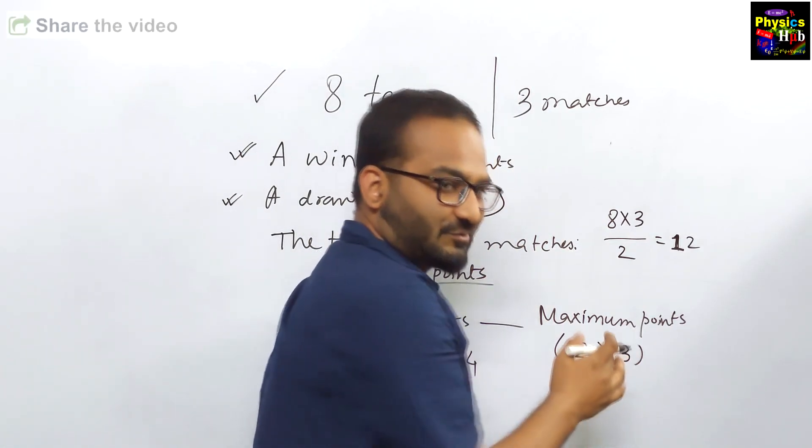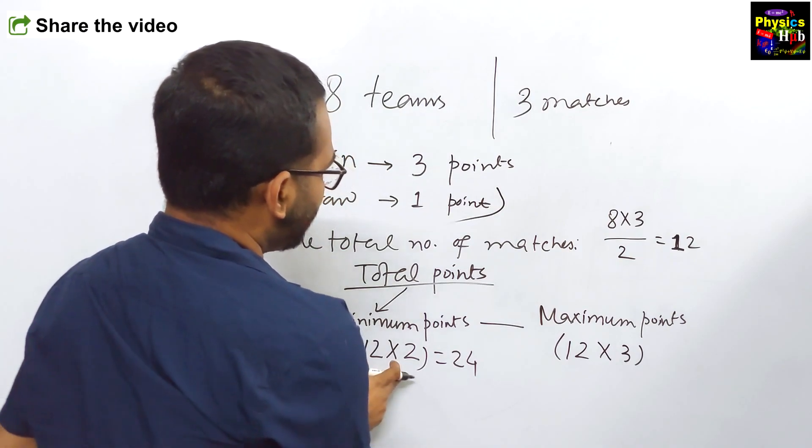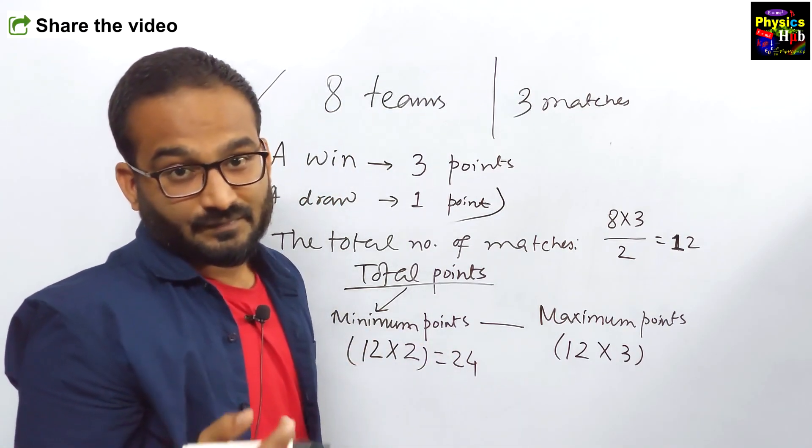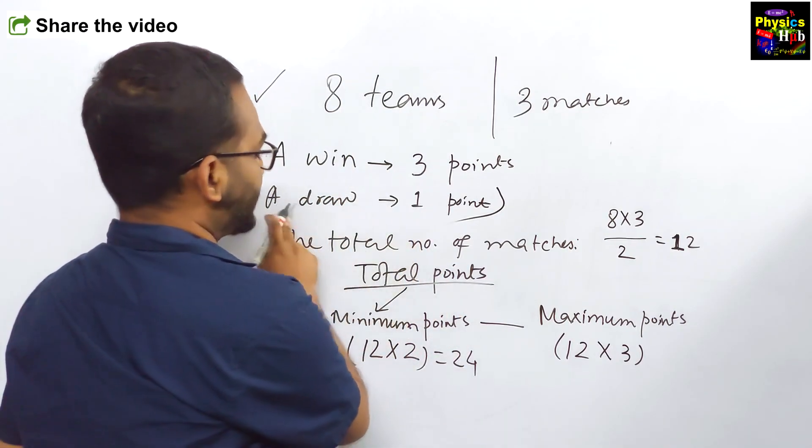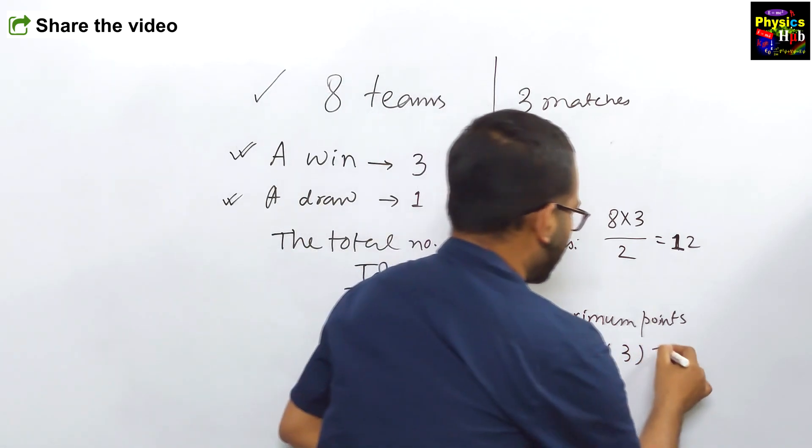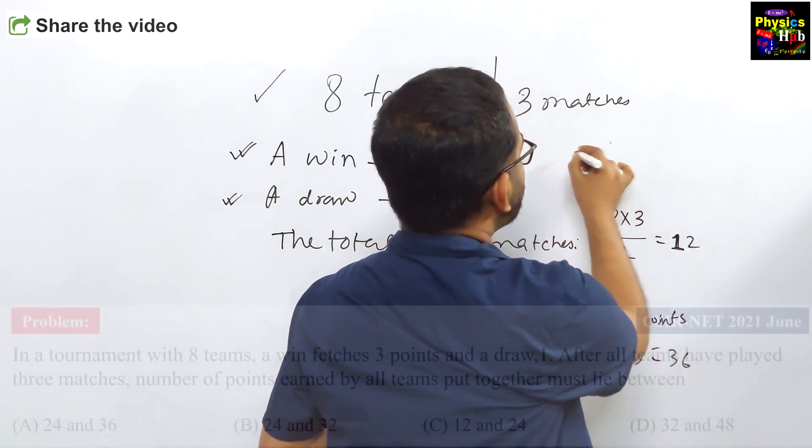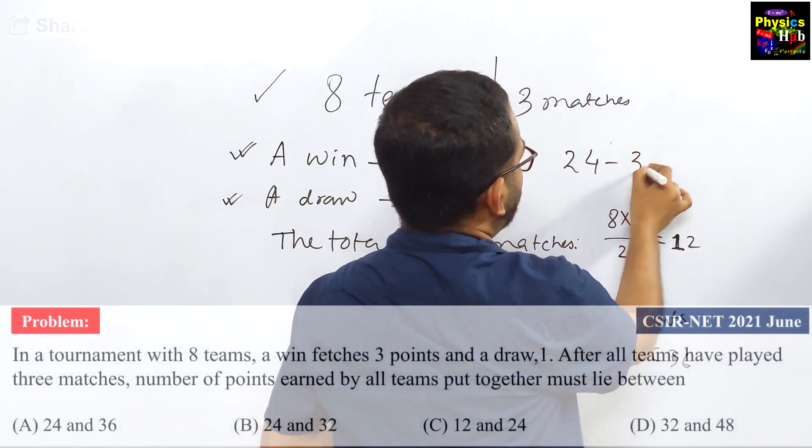It is not 12 × 6. It is 12 × 3. But here, 12 × 2, because each of the teams is getting one point when it is a draw. So, this will be the range. This is 36. So, the range is 24 to 36.